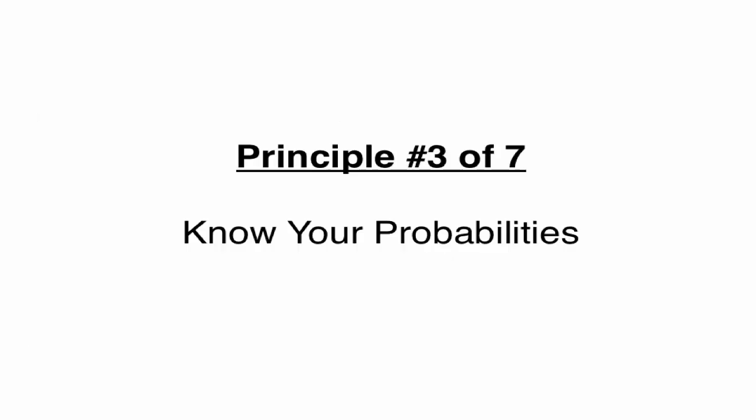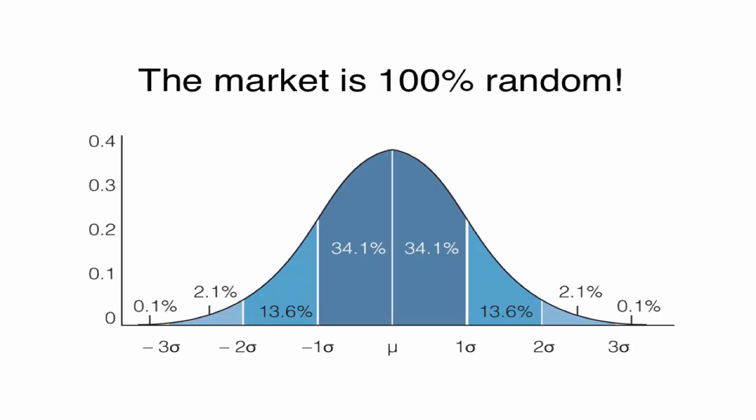So this brings us to principle number three. We have to know the probabilities that we're trading. And this is something that I go over in our online membership is finding these probabilities and how to determine these. But remember this graph from video one, we have to keep in mind that the market is 100% random. It's statistically and all the studies have proven that on any given day, the market has an equal chance of going up or down and has an equal chance of going up 1% or down 1%, down 2% or up 2%. So if we know that, why are we trying to pick the market direction? We should be trading statistically high probability trades that we know will make money over time.